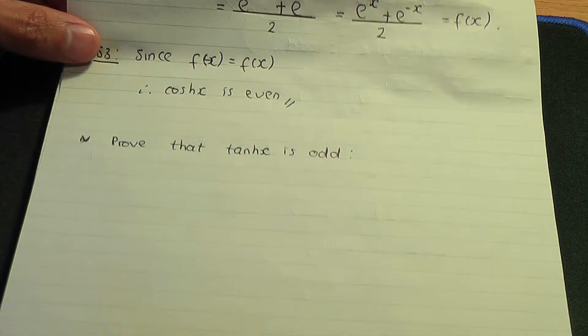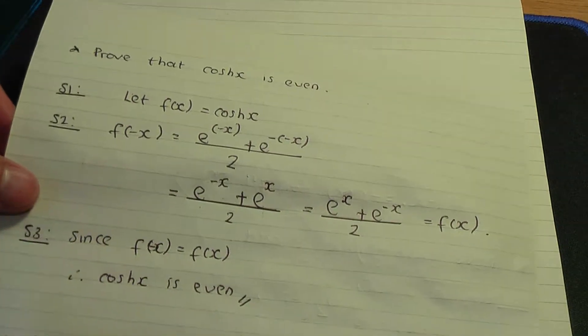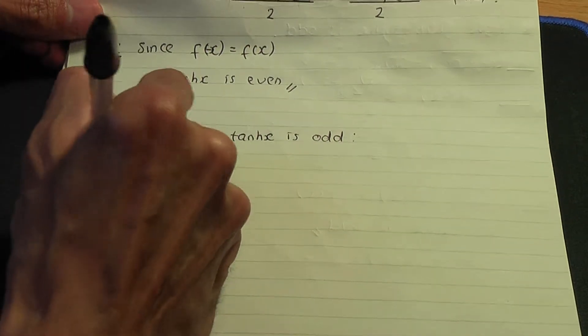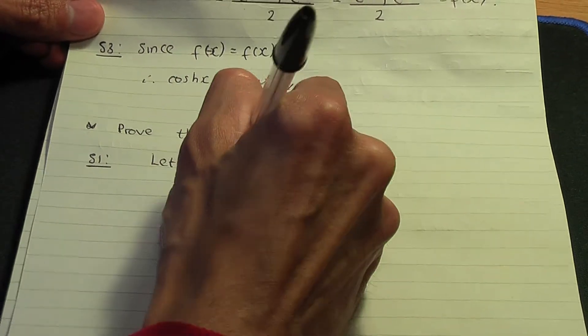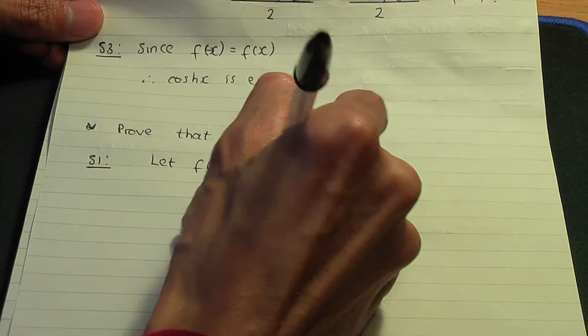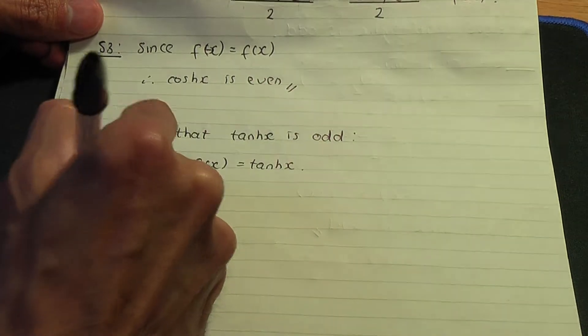Same steps as we've seen. In step number one, let f(x) equal hyperbolic tan. That is step number one.